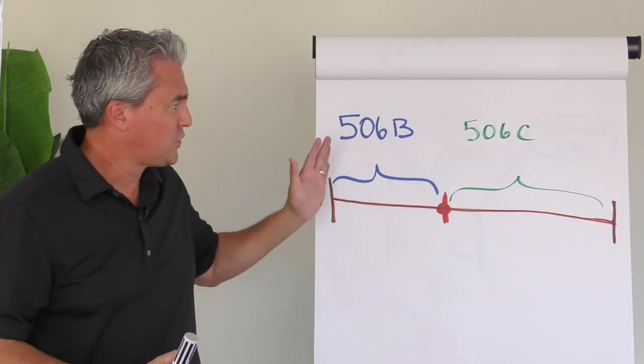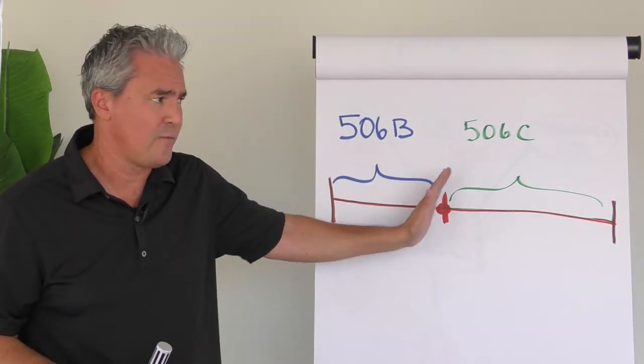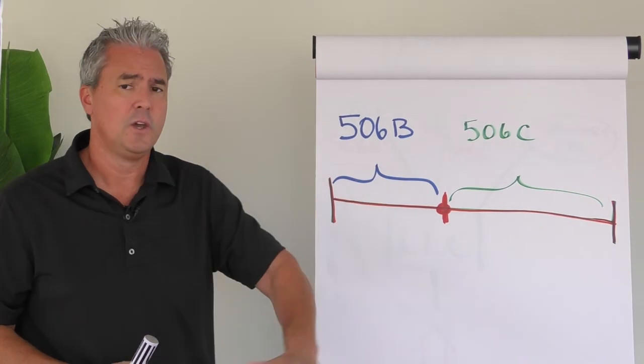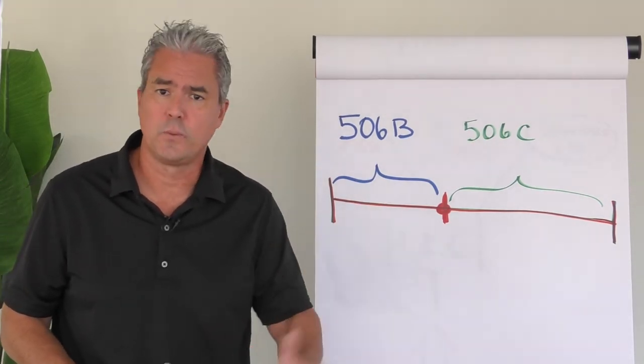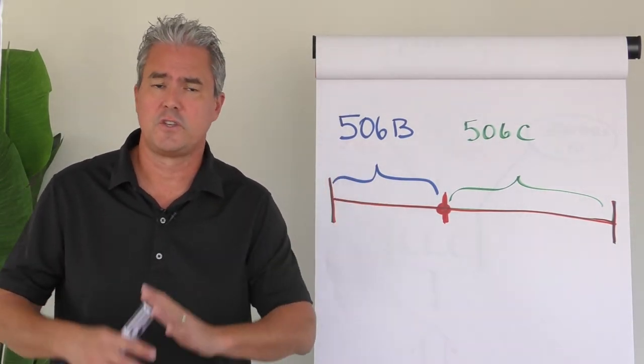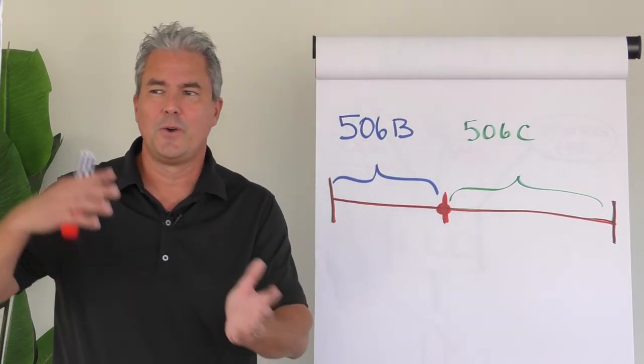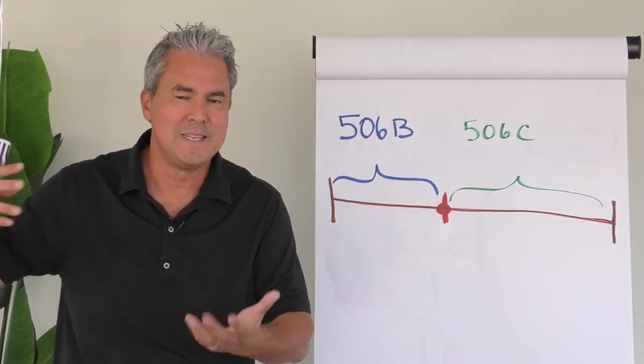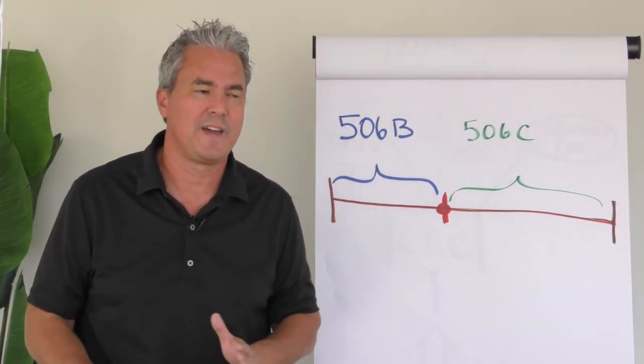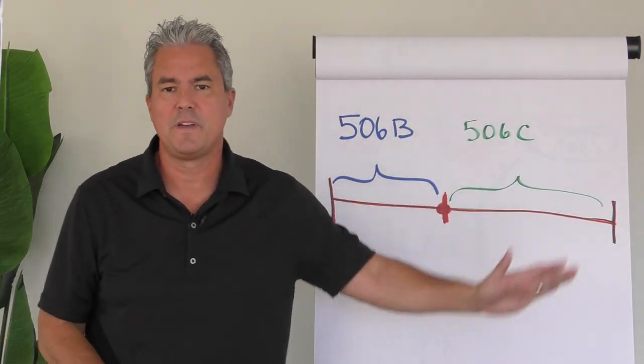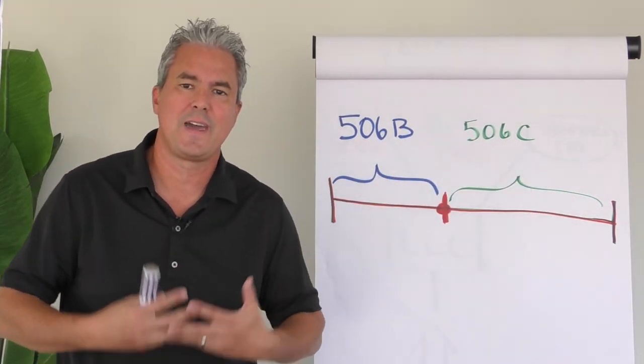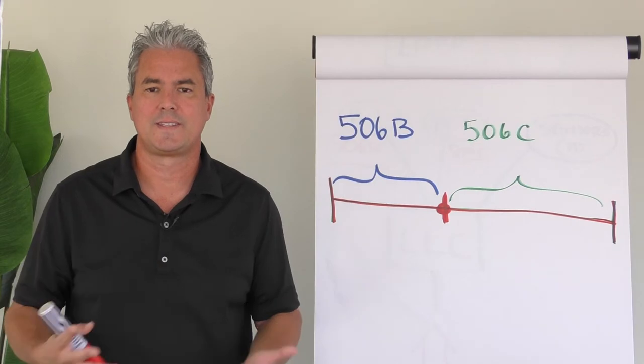We like to actually do a resolution that says, hey, on this date, we are terminating our 506B offering. We're no longer doing a 506B. We're no longer accepting documents. We're no longer accepting wires. There's no lingering effects. There's no IRA money that's been delayed. We're completely done with 506B. And on this date, we're pivoting to 506C.